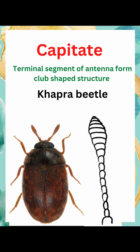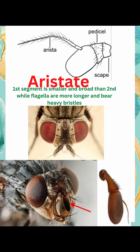Now capitate type antenna. In this, the terminal segment of the antenna forms a long knob or cap. Now aristate type of antenna, which is present in housefly. In this, the first segment is smaller and broad, then the second, while the flagellum is more longer and bears heavy bristles.